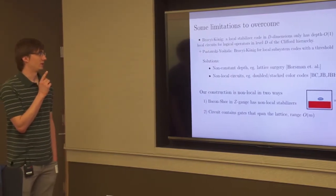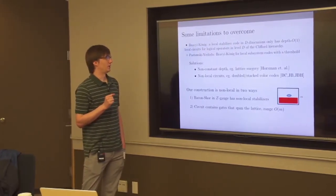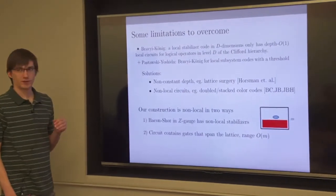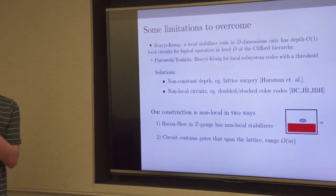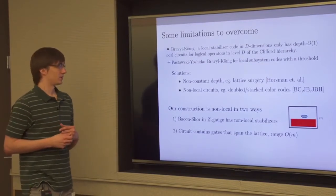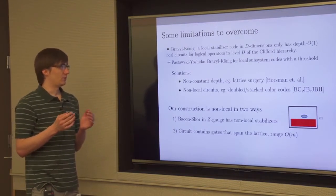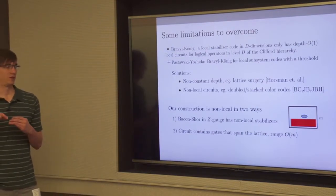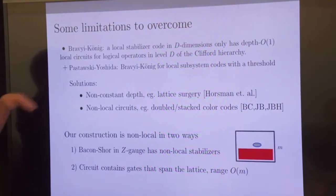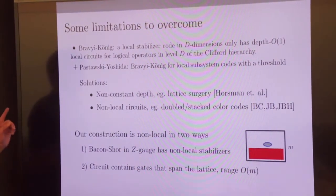The second limitation is the Bravyi-König theorem, which says that in d dimensions, for a topological code, the logical gates implemented by local circuits can only achieve the d-th level of the Clifford hierarchy. Because any finite level of the Clifford hierarchy is not universal, you cannot get a universal gate set this way. In our case we have a 2D code, so ostensibly we can only implement gates from the second level of the Clifford hierarchy — the Clifford group.